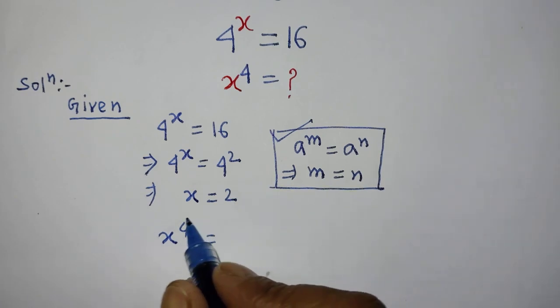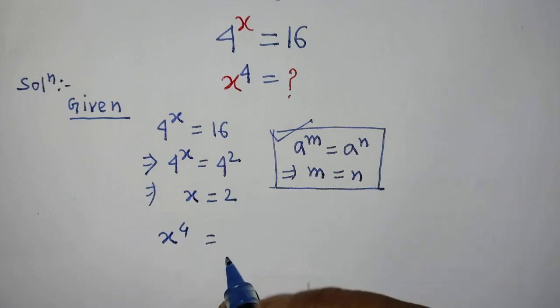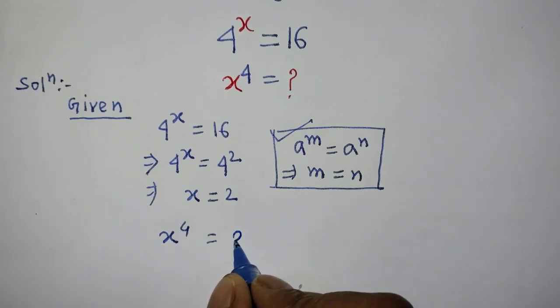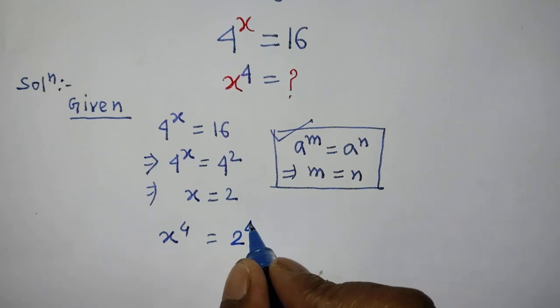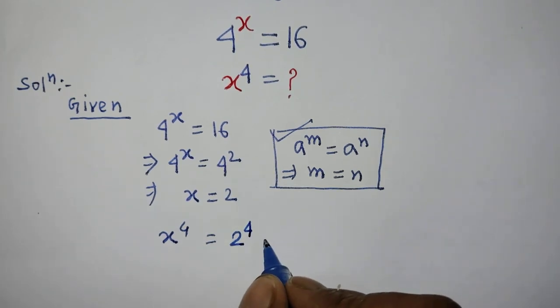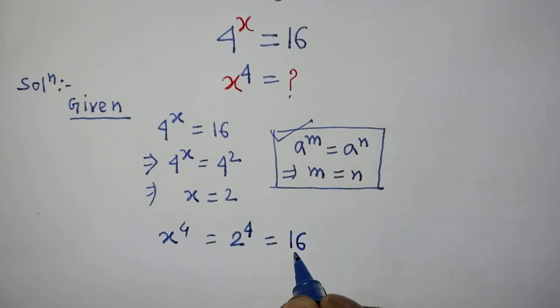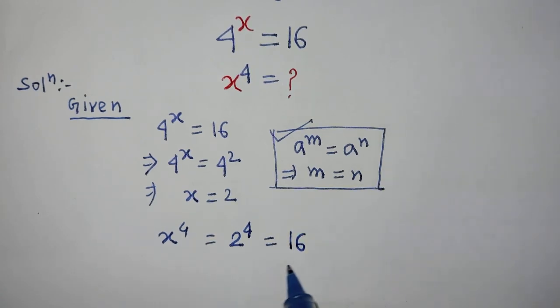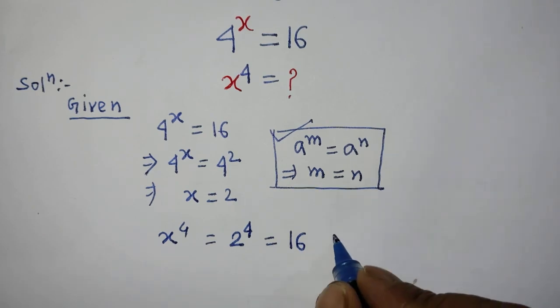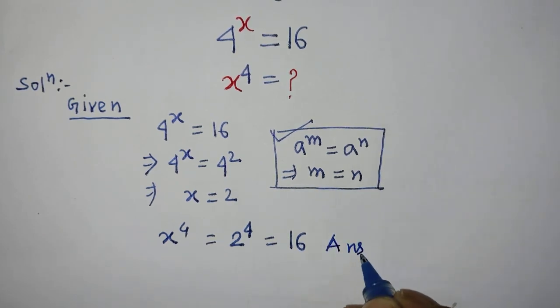So it will be 2 to the power 4 is equal to 16. So guys, the value of x to the power 4 will be 16. This is our final answer.